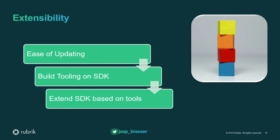Another part of what we wanted to ensure was extensibility. Whenever a new API endpoint is introduced, we shouldn't have to rewrite our entire code base. Extensibility was very important for us. Another part of that is we want to build our tooling on top of our SDKs, rather than building integrations or use cases directly on top of the API. We can also extend our SDKs based on the requirements of the tools, so we get a feedback loop going — developing a new tool leads to new functions and new utilities in our SDKs.